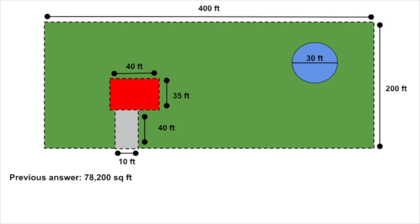So we need to subtract it out of the area of the total property. We can pull up our numbers and see that we already figured out the area of the yard as 78,200 square feet. The diameter of the pool is 30 feet. So what's the treatable area of the yard now? I'm going to let you pause the video, take a crack at this, and come on back when you're ready.